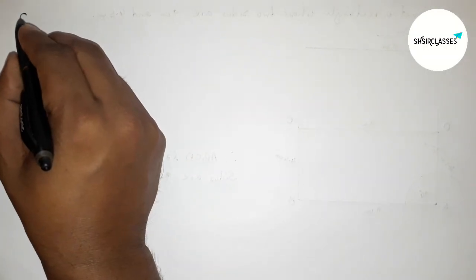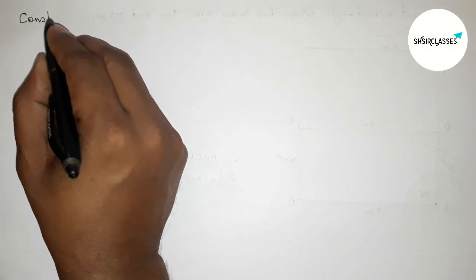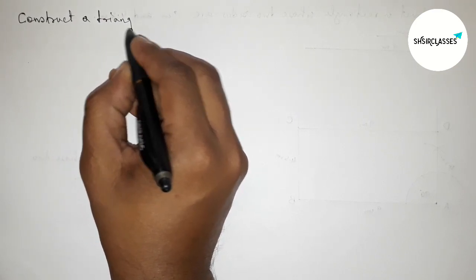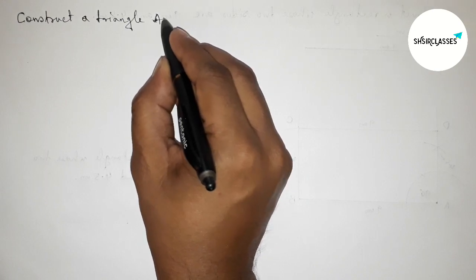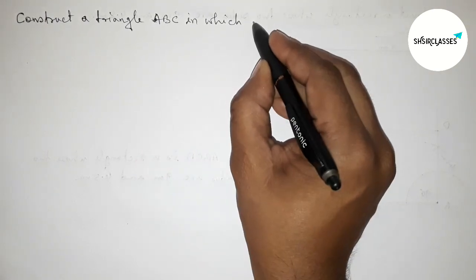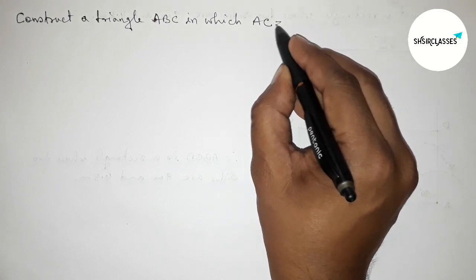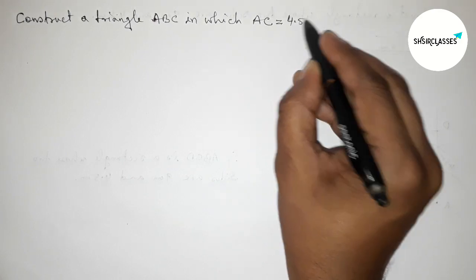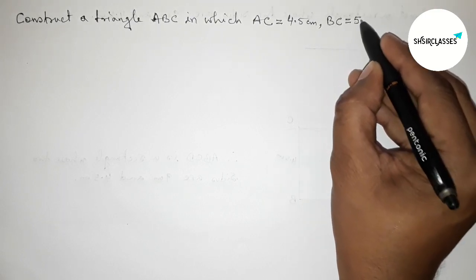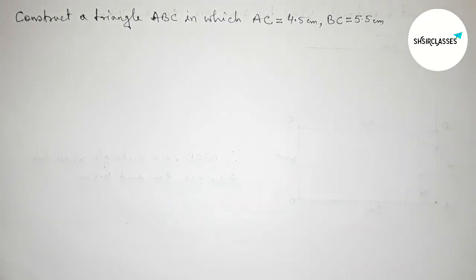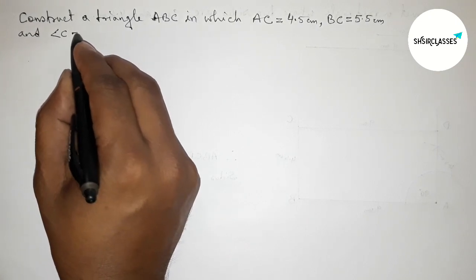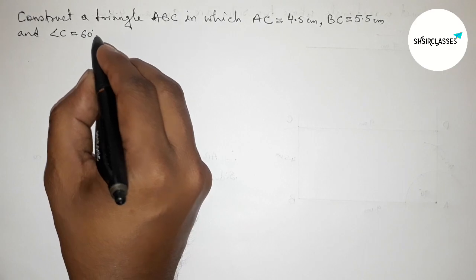Hi everyone, welcome to SI Share Classes. Today in this video we have to construct a triangle ABC in which AC equals 4.5 centimeters, BC equals 5.5 centimeters, and angle C equals 60 degrees. Please watch the video till the end. Let's start.